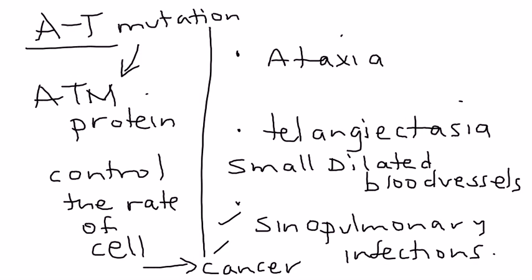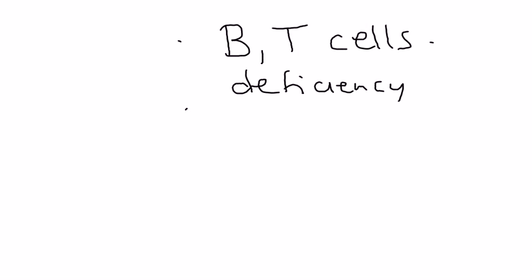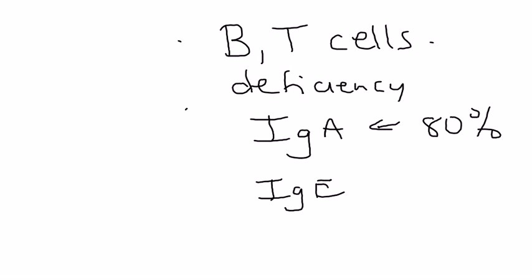In addition to that, you also have deficiencies of B and T cells, and that leads to a deficiency in immunoglobulins. And the key ones are IgA and IgE. This one is by far the most, 80% of patients with AT will have IgA deficiency.